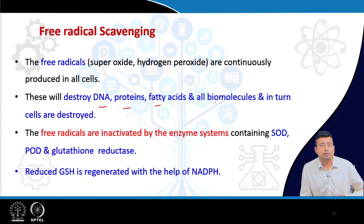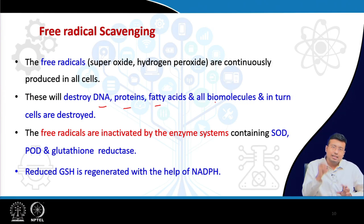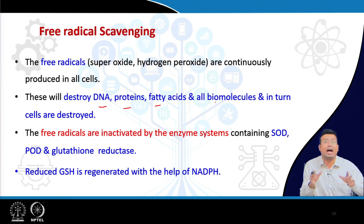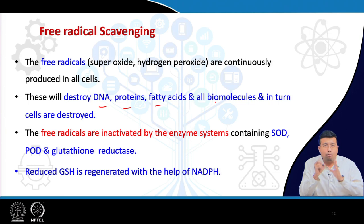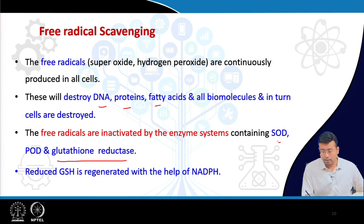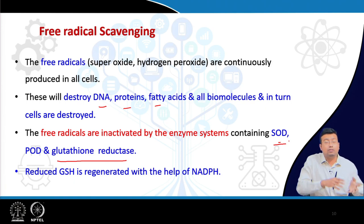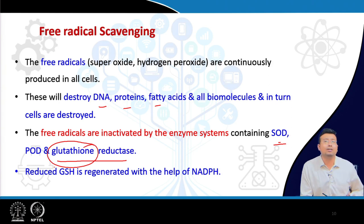Unchecked free radicals create a chain of cellular oxidation reactions, leading to lipid peroxidation and destruction of the entire cell membrane, DNA, and RNA. There is a mechanism to check the activity of these free radicals — they are controlled by multiple enzymes, the most important being glutathione peroxidase and glutathione reductase, as well as superoxide dismutase.